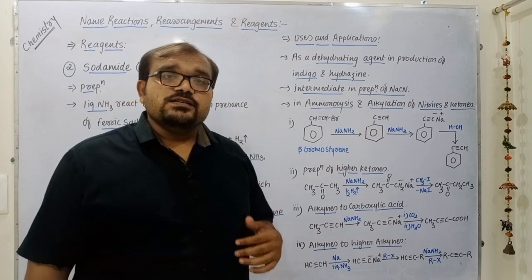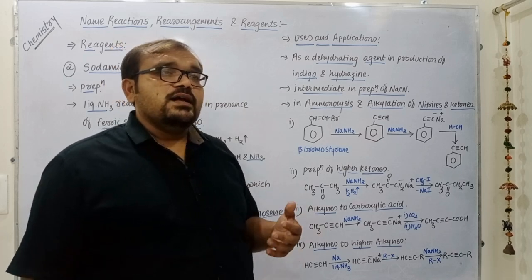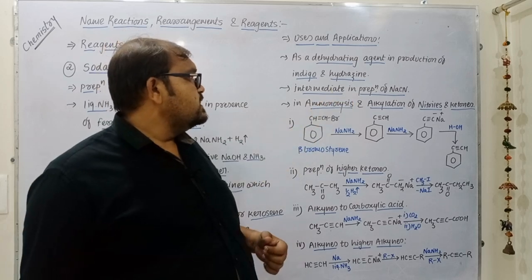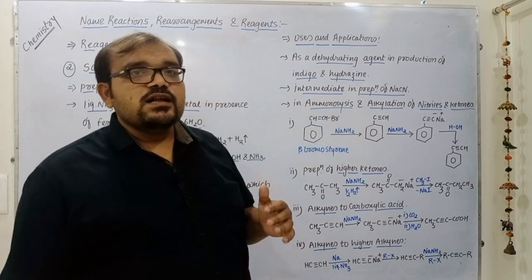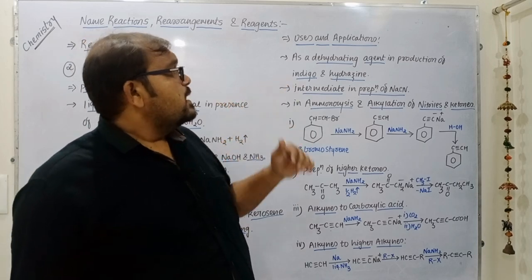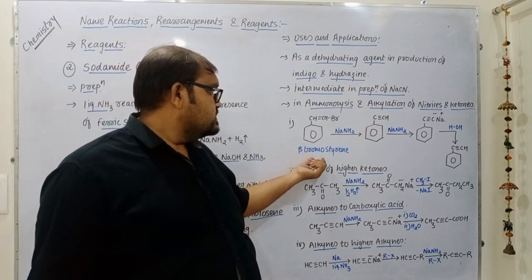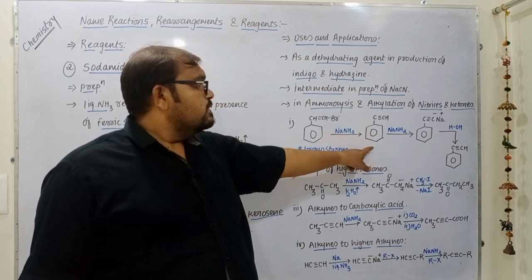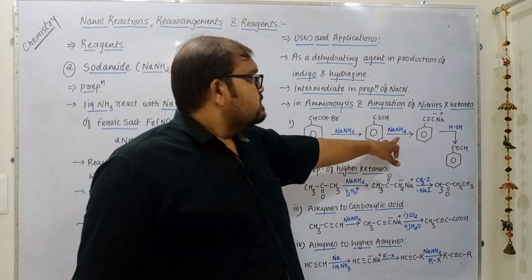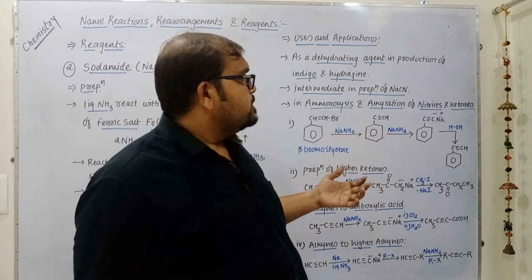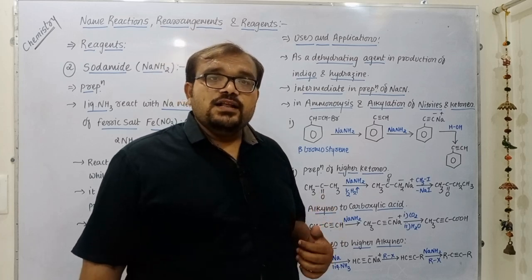Uses and applications of sodamide: it is used as a dehydrating agent in the preparation or production of indigo and hydrogen. It also acts as an intermediate for synthesis of sodium cyanide, and is used for ammonolysis and alkylation of nitriles and ketones. One application: bromostyrene reacts with sodamide to give a sodium intermediate — phenyl acetylene — which further reacts with sodamide to give a sodium salt, and reaction of this sodium salt with water gives phenyl acetylene.